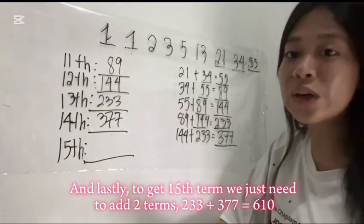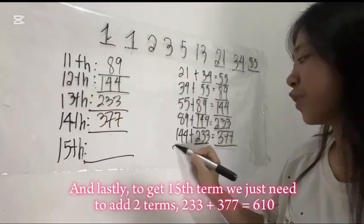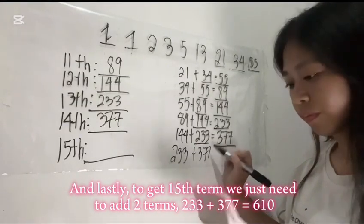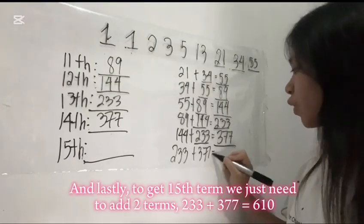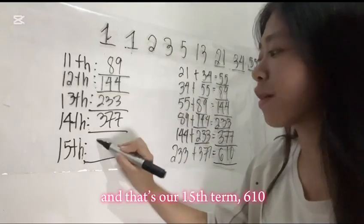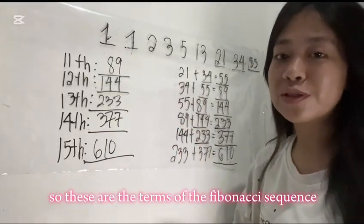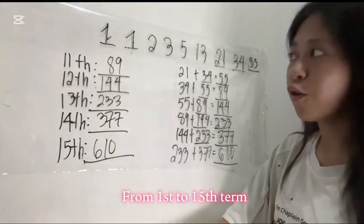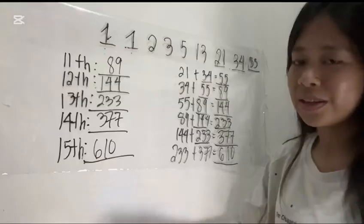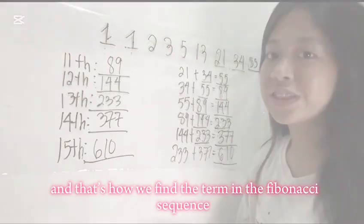And lastly, to get the 15th term, we just need to add the two terms. 233 plus 377 is equal to 610. And that's our 15th term, 610. So, these are the terms of the Fibonacci sequence from 1 to 15th term. And that's how we find the term in the Fibonacci sequence.